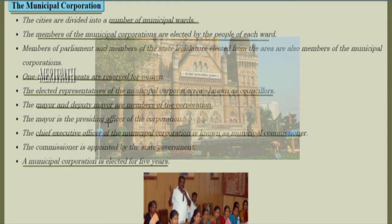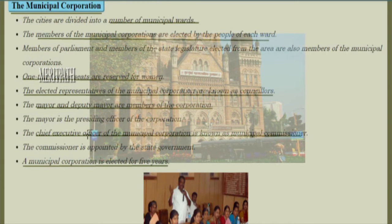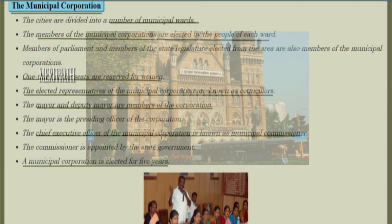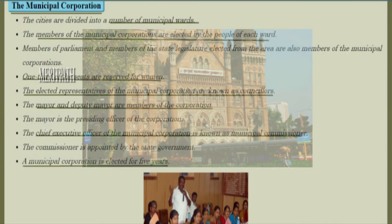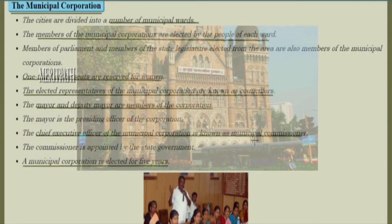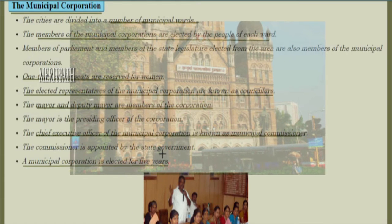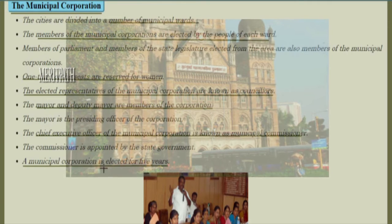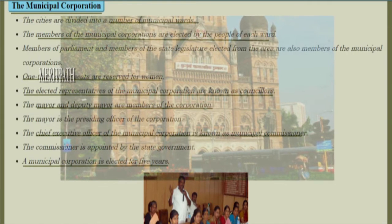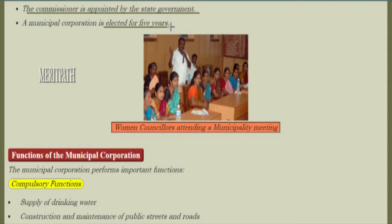The mayor is the presiding officer of the corporation. The chief executive officer of the municipal corporation is known as the municipal commissioner, who is appointed by the state government. A municipal corporation is elected for five years. In this image we see women councillors attending a municipality meeting.